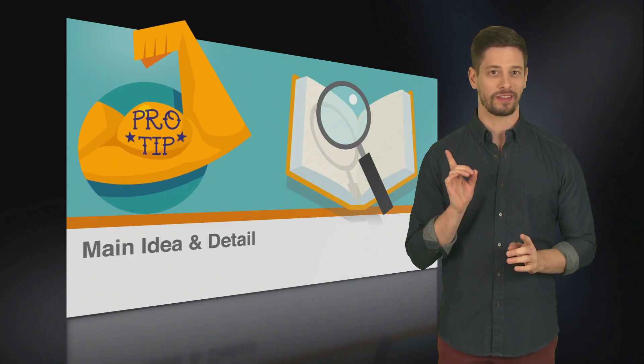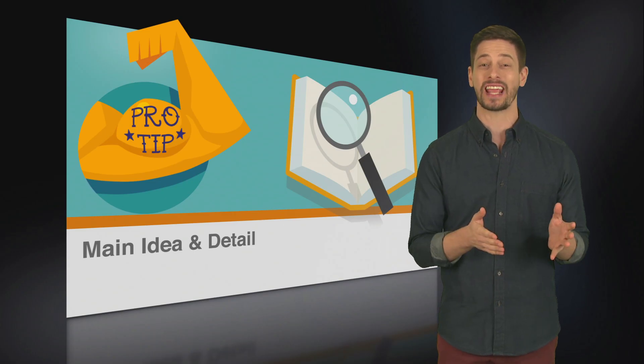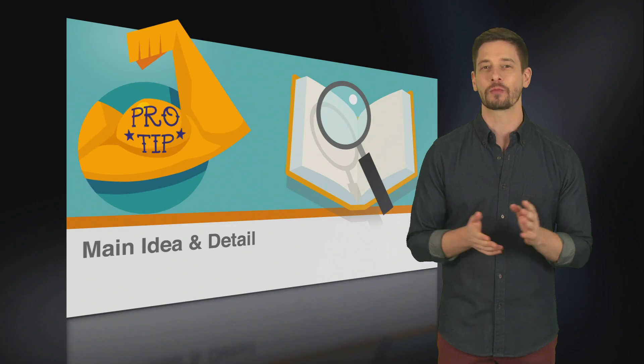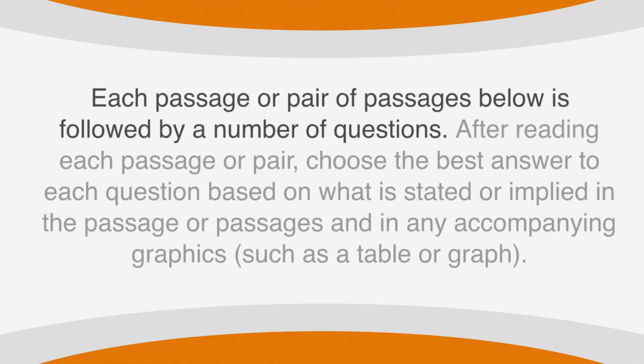Here's a pro tip. The SAT has a lot of useful information embedded in the directions and the questions. For example, at the beginning of the reading section, you'll find the following directions. Each passage or pair of passages below is followed by a number of questions. After reading each passage or pair, choose the best answer to each question based on what is stated or implied in the passage or passages and in any accompanying graphics, such as a table or graph.